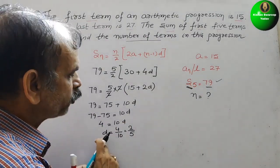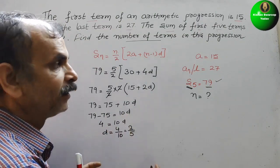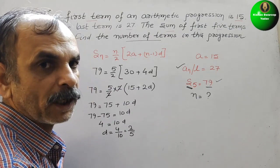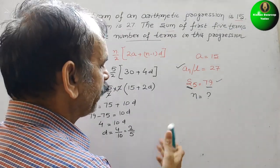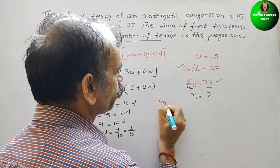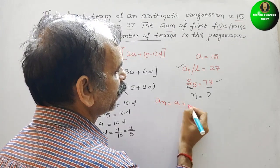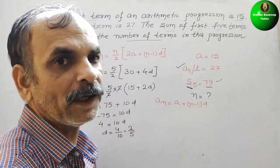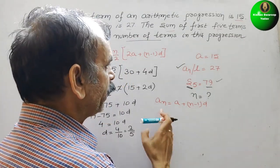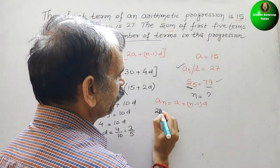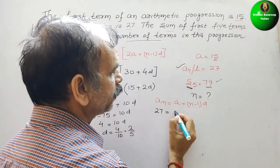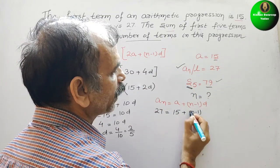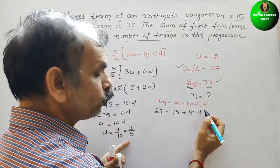Now we will substitute this here, in the An formula. What is your An formula? An is equal to A plus n minus 1 into D. Substitute the values: An is 27, equal to A is 15 plus n minus 1, and D is 2 by 5.